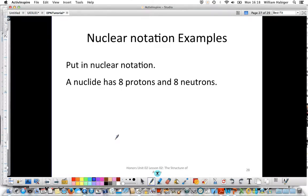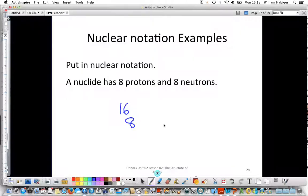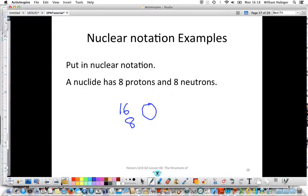A nuclide has eight protons, eight neutrons. So we know that the number on the bottom is going to be an eight. We add those two together to get the mass number because the mass number is the protons plus the neutrons. So eight plus eight is 16. And we look on our periodic table to see what element it is. Eight protons is going to be oxygen. So there we go. Oxygen-16 written in nuclear notation.